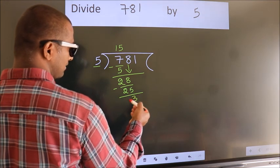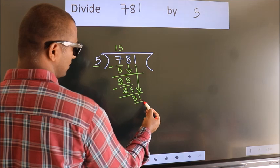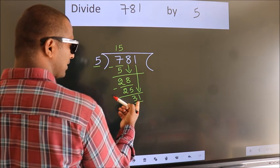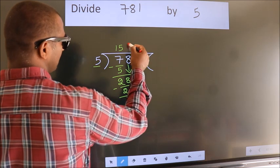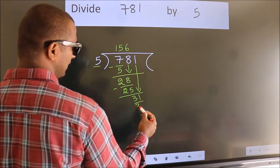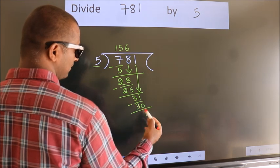After this, bring down the next number. So, 1 down, so 31. A number close to 31 in the 5 table is 5 sixes, 30. Now we subtract. We get 1.